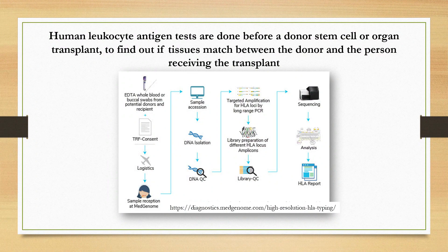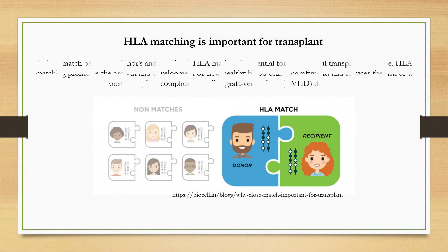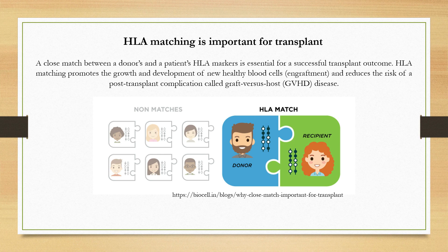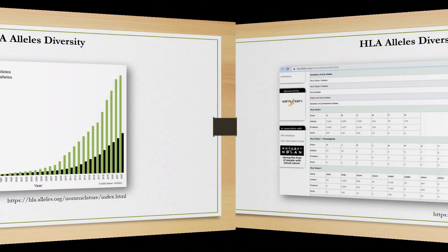Human leukocyte antigen tests are done before a donor stem cell or organ transplant, to find out if tissues match between the donor and the person receiving the transplant. A close match between a donor's and a patient's HLA markers is essential for a successful transplant outcome. HLA matching promotes the growth and development of new healthy blood cells — engraftment — and reduces the risk of a post-transplant complication called graft-versus-host disease, GVHD. However, there are more than 35,000 described alleles, which makes the search for a compatible donor even more difficult.